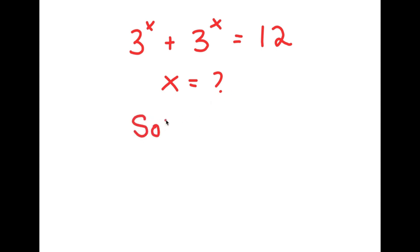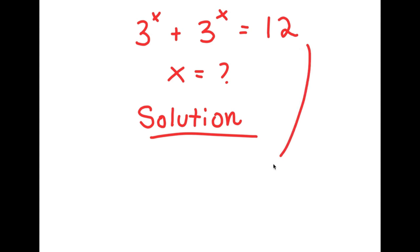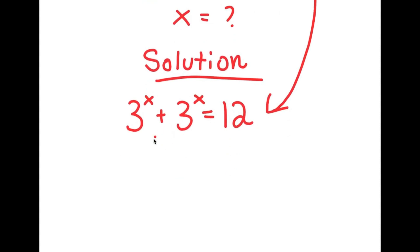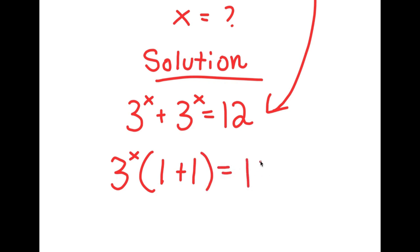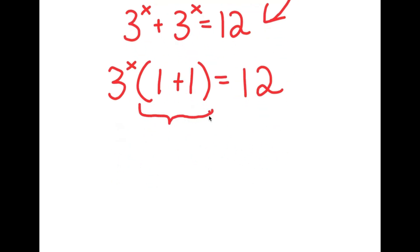For my solution, I'm going to first start by rewriting my equation: 3 to the power of x plus 3 to the power of x is equal to 12. On my left-hand side, I'm going to go ahead and factor out 3 to the power of x. So now I get 3 to the power of x times 1 plus 1 is equal to 12. And 1 plus 1, that's equal to 2.